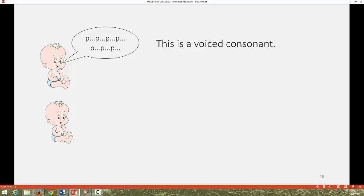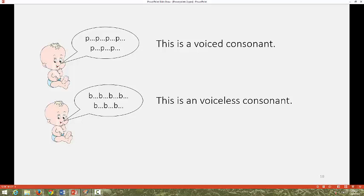The p phoneme is known as a voiceless consonant, as to produce it we do not need to vibrate our vocal cords. The b phoneme is known as a voiced consonant, as to produce it involves the vibration of the vocal cords.